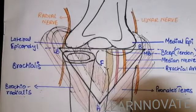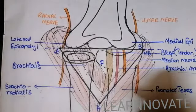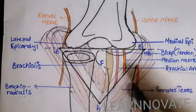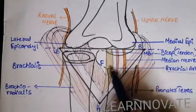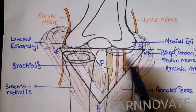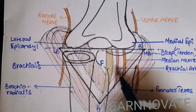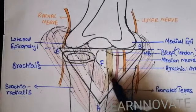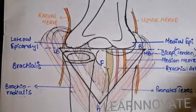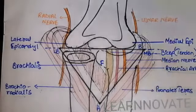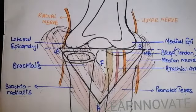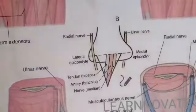It will going to attach on the tuberosity of the ulna. So the contents include the median nerve, the brachial artery, and the tendon that is called as the biceps brachii tendon.